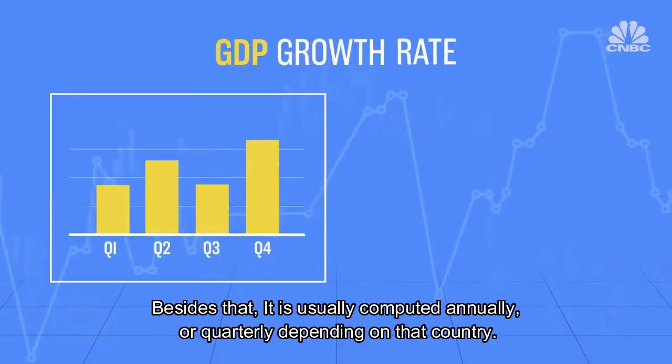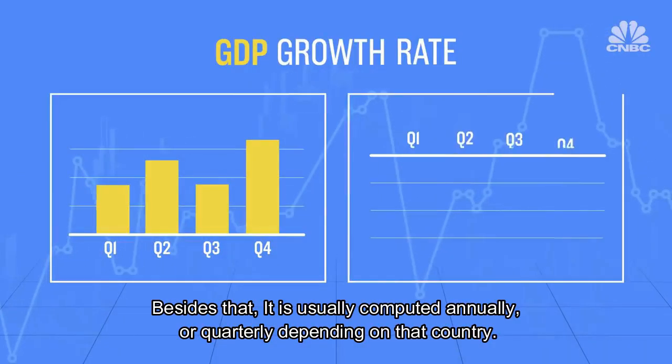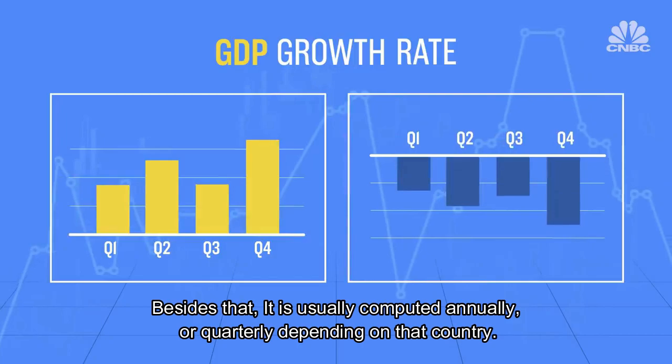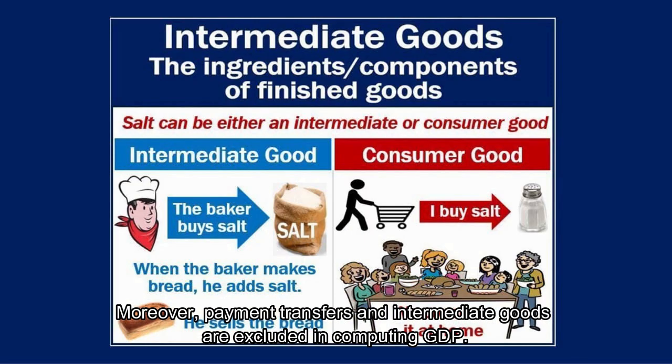Besides that, it is usually computed annually or quarterly depending on that country. Moreover, payment transfers and intermediate goods are excluded in computing GDP.